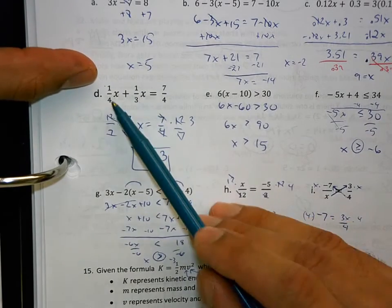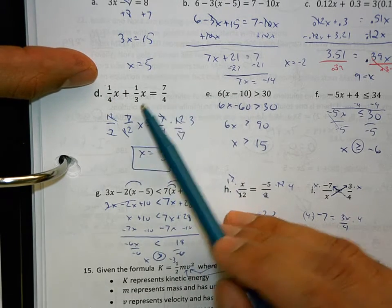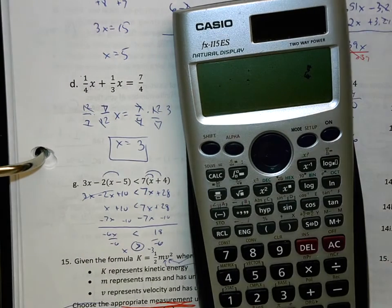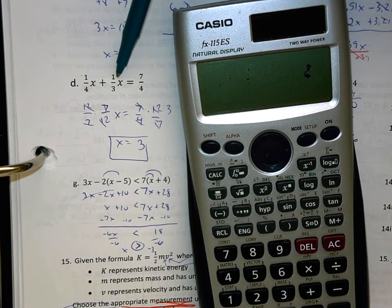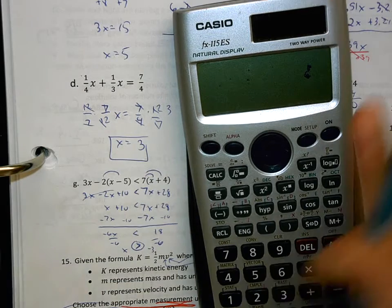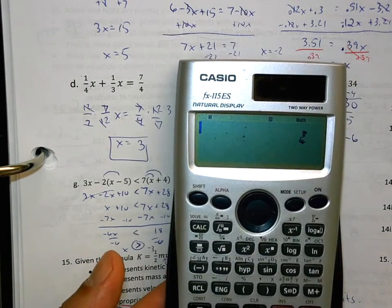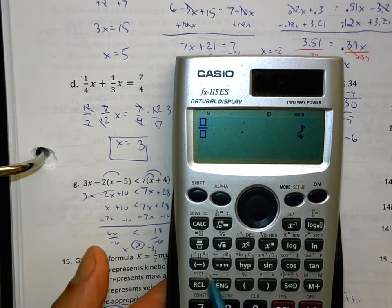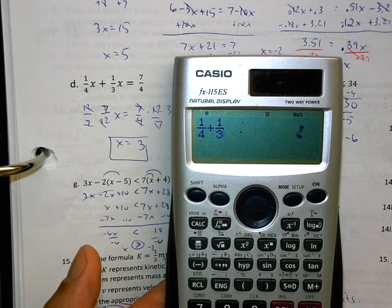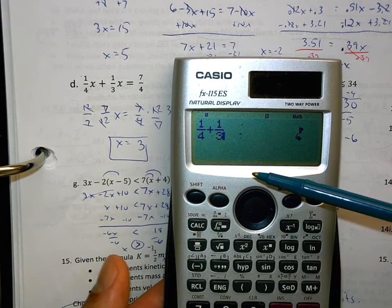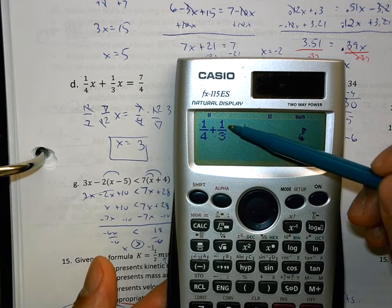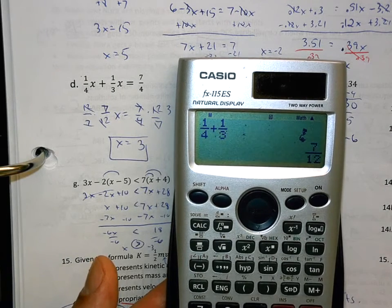This one's a little bit harder. 1/4 x plus 1/3 x equals 7/4. I'm a big proponent of using calculators for fractions. So I'm going to show you how I did this. Since this is an x and this is an x and they're on the same side of the equal sign, I'm just going to put them together. I'm going to put 1/4 x together with 1/3 x. And I use my fraction button. Here's my fraction button. 1 over 4 x plus 1 over 3. What this is going to do is this is going to find a common denominator and it's going to add those two values together. 1/4 plus 1/3. And it's going to take and multiply this by 3 and that by 3 and this by 4 and that by 4. Put them together and then it's going to reduce.